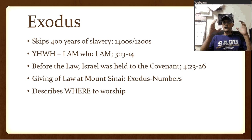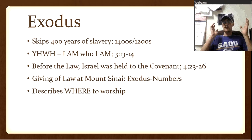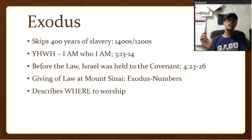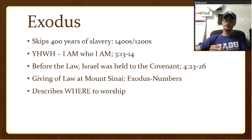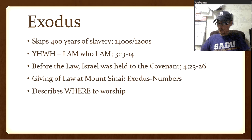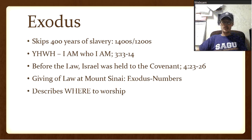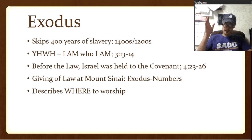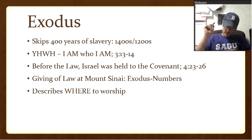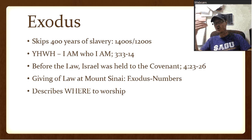Exodus skips 400 years of slavery — after Genesis ends, the Israelites are enslaved to Egypt — and picks up near the tail end of it, somewhere around the 1400s to 1200s BC depending on when Israel left Egypt. Moses is called by God to lead the Israelites out of Egypt. Moses asks God: 'If I come to the people of Israel and they ask, what is his name? What shall I say?' God said to Moses, 'I am who I am. Say this to the people of Israel: I am has sent me to you.' That's where we get Yahweh.